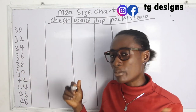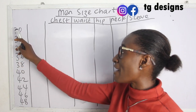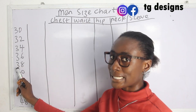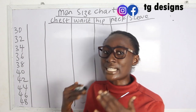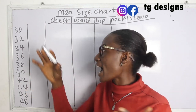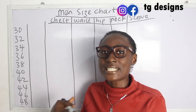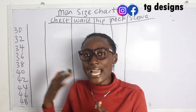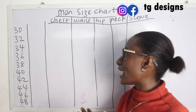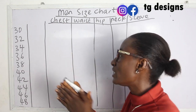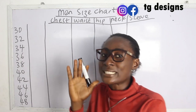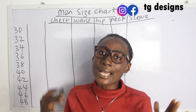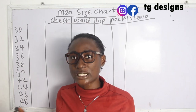So the measurements go: 30, 32, 34, 36, 38, 40, 42 — what they did was just add two inches each time. Now the next thing we have to do is group these sizes into different parts: extra small, small, medium, large, extra large, and XXL.